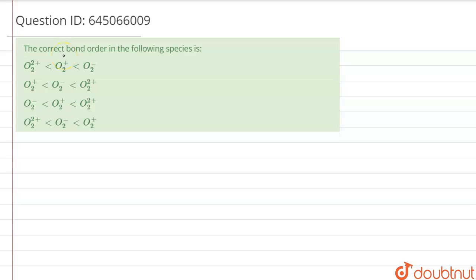Hello everyone. In this question we have been given: find the correct bond order in the following species. For finding bond order, we will have to make a table in which we first write the number of electrons on the left and the bond order on the right.